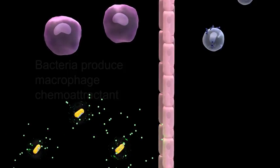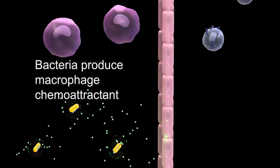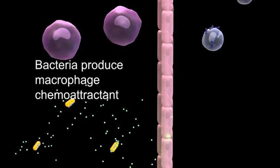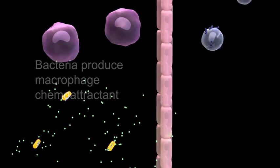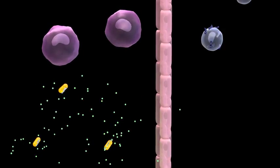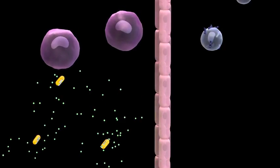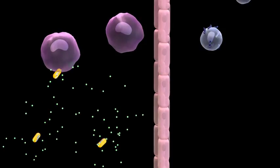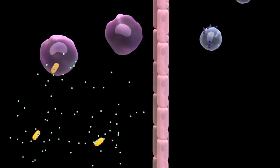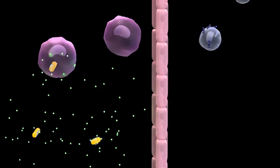Most bacteria produce a chemoattractant that attracts the alveolar macrophages to them. The alveolar macrophages engulf the bacteria and are capable of killing most types of bacteria, including virulent mycobacteria.